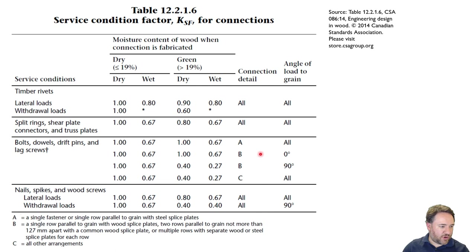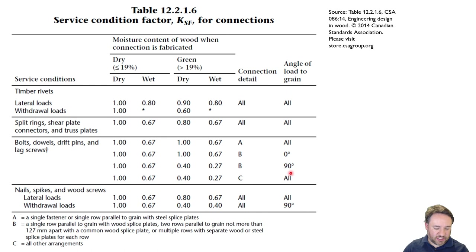For load applied perpendicular to grain — 90 degrees — there are reduced properties for wet installation. Any situation that doesn't fit under A or B is condition C, and I use the worst-case moisture content service condition factors. That's generally how the table works; it will be clearer with examples later.